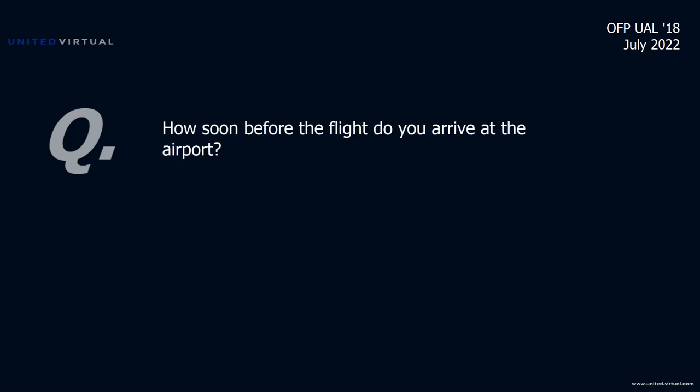Question from Tim: how soon before the flight do you arrive at the airport? There are two parameters: domestic versus international, and whether it's a day-one pairing or a downrange flight. Day one domestic: one hour before departure. Subsequent legs: 45 minutes. International departures always require a full hour. Day one of an international departure is an hour and a half — the extra half hour allows time to meet, review everything, because international flights involve significantly more than a short domestic hop.